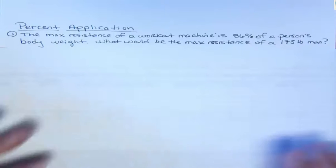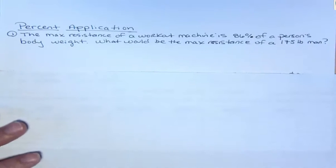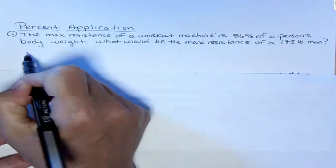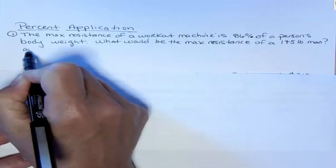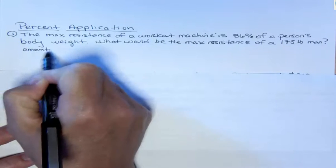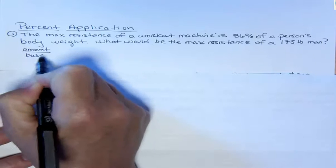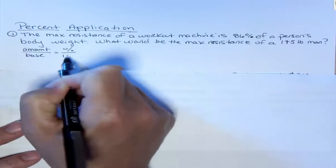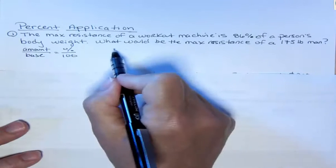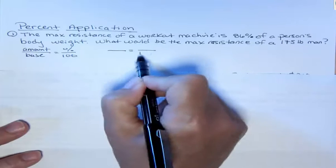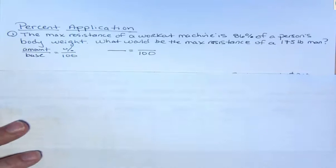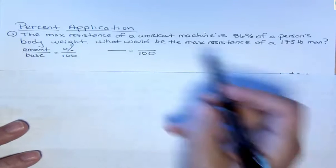So what we want to do is set up a percent proportion, which we talked about in another video. I'm interested in the amount over the base and the percent over 100. So what do I know here? Well, I know 100 for sure. And then I look for the number with the percent symbol on it. I have one. It's 86%.